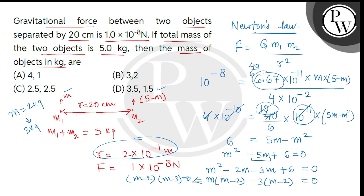These 5 kg masses mean that if we consider one mass, we will get 2 kg. So the other mass will be 5 minus 2, which is 3 kg. The correct answer will be option B. Thank you.